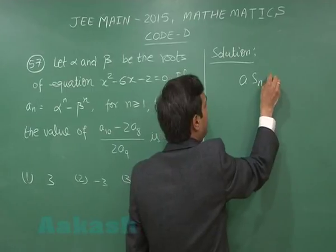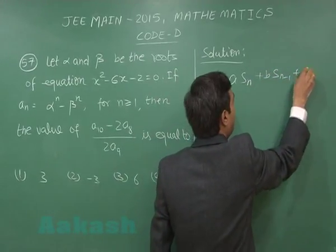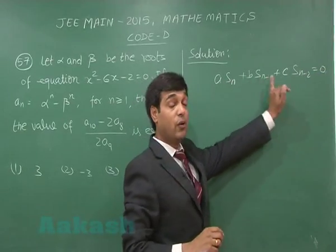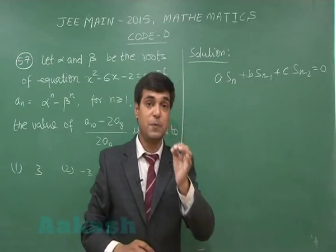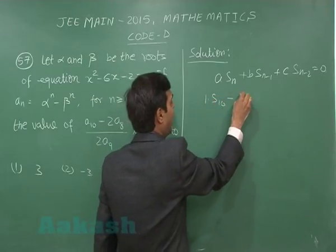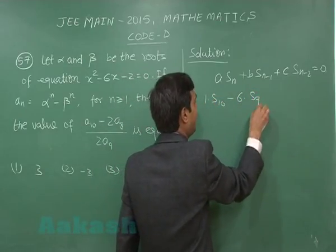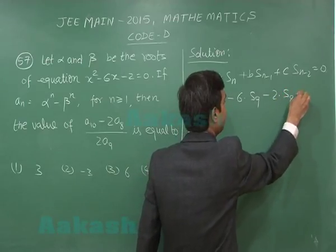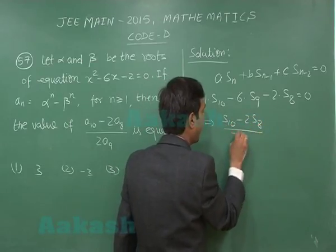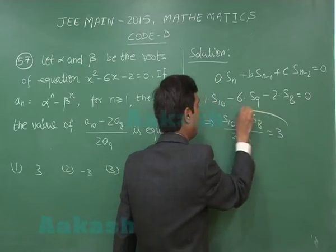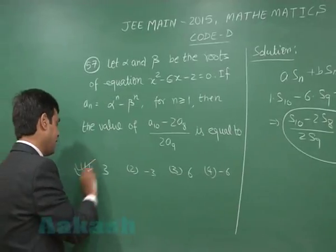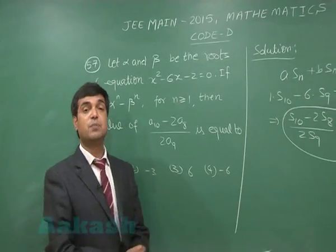Using the result that a·S_n + b·S_(n−1) + c·S_(n−2) = 0 for a quadratic ax²+bx+c=0, we get S10 − 6·S9 − 2·S8 = 0, so (S10 − 2·S8) / (2·S9) = 3. From the given options, option number 1 is correct.